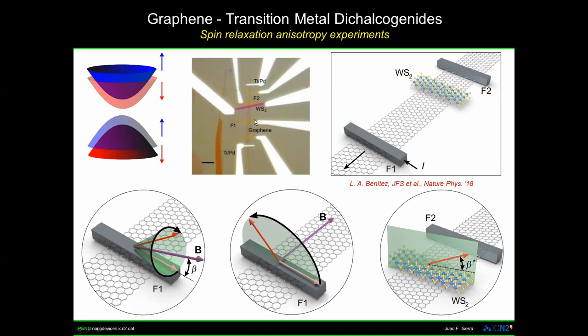In these devices, we implement the oblique spin precession technique, applying the magnetic field at some specific angle. We also apply the magnetic field along the spin channel to directly extract the out-of-plane spin lifetime. The technique basically involves injecting spins and having them propagate along the channel, and we pick up the signal in the ferromagnetic electrode near the transition metal dichalcogenide region.